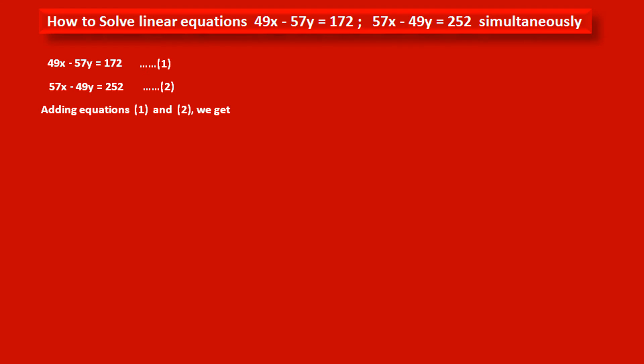Adding equations 1 and 2, we get: 49x - 57y = 172 plus 57x - 49y = 252. By adding terms of the same variables, we get: 49x + 57x = 106x, and -57y - 49y = -106y. On the right-hand side, 172 + 252 = 424.